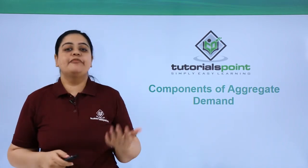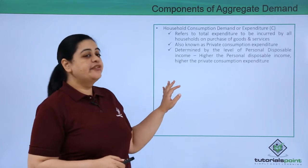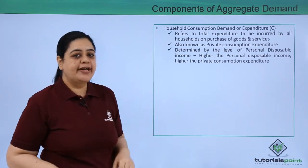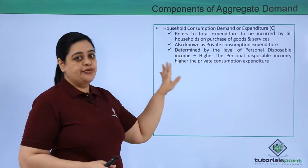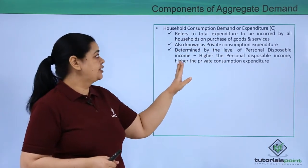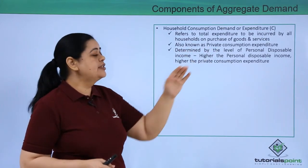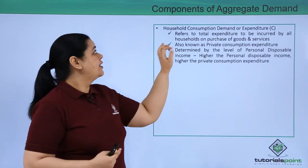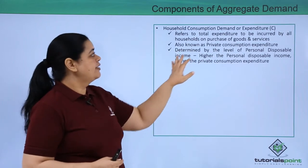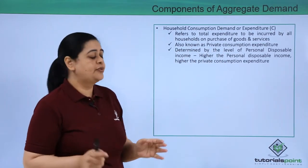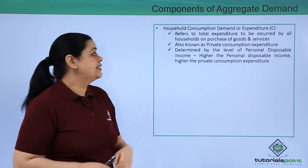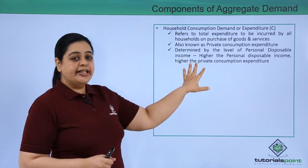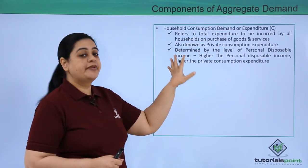Let us understand the components of aggregate demand. The first component is household consumption demand or expenditure, represented by C. Household consumption refers to the total expenditure incurred by households on the purchase of goods and services. In an economy like India, if there are 1 million households, household consumption demand would be the total expenditure done by all those households on goods and services. This is also known as private consumption expenditure.